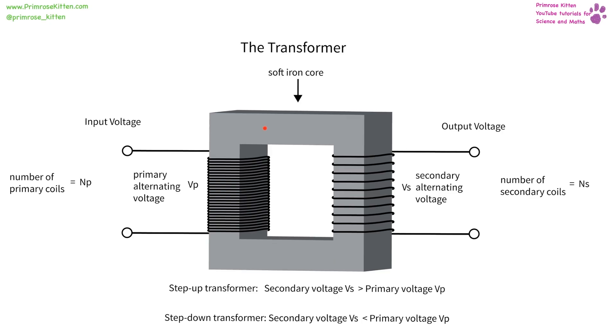In a transformer, we have a soft iron core. We have a wire which is going to be coiling around, and you'll notice there are different number of coils here. We are going to be looking at varying the number of coils so that we can vary the voltage that goes into and comes out of our transformer. If we have a step up transformer, the secondary voltage is going to be greater than the primary voltage. So the voltage coming out is going to be greater than the voltage going in. If we have a step down transformer, the secondary voltage is going to be less than the primary voltage. So the voltage coming out is going to be less than the voltage going in.